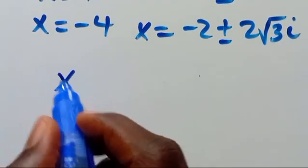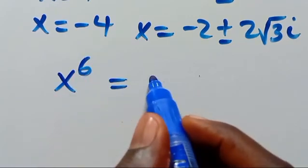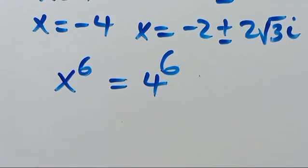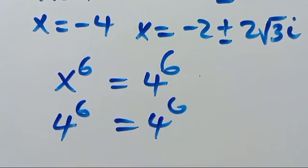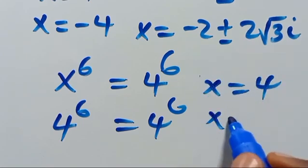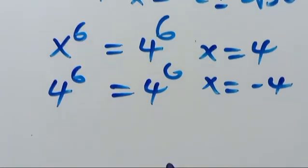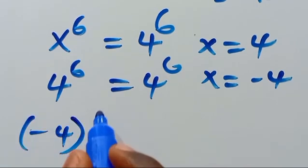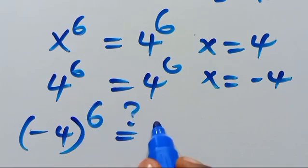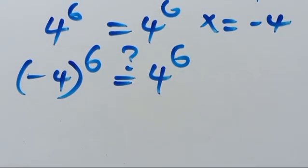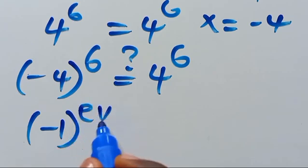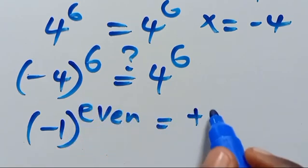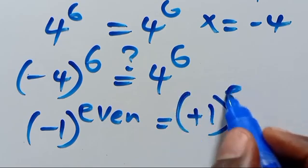Recall that we have x to the power of 6 equals 4 to the power of 6. This is satisfied when x equals 4, giving 4 to the power of 6 equals 4 to the power of 6. When x equals negative 4, we get negative 4 in parentheses to the power of 6, which also gives 4 to the power of 6, because any negative value raised to an even power gives a positive result.